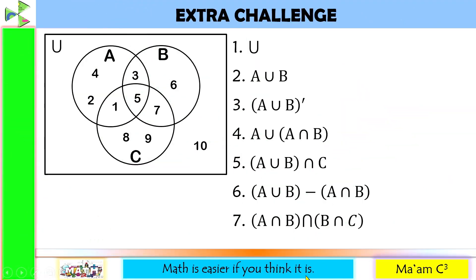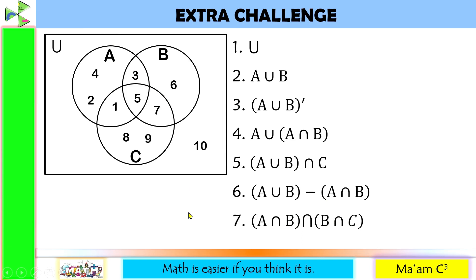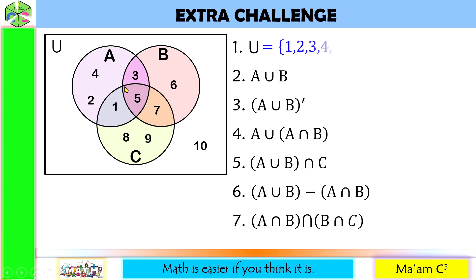Let us do extra challenge. Number 1: let us determine the universal set. This is the combination of sets A, B, and C, plus the element 10. So the universal set contains 1, 2, 3, 4, 5, 6, 7, 8, 9, and 10.